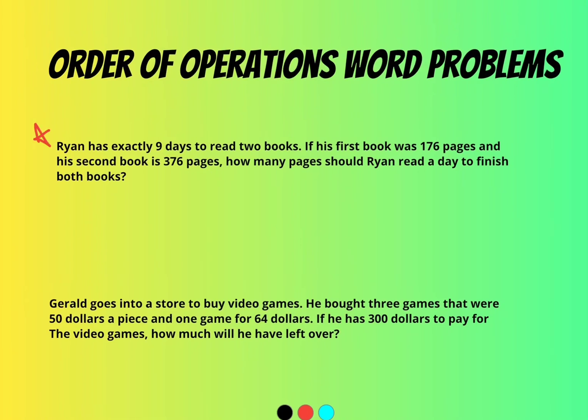it says Ryan has exactly nine days to read two books. If his first book was 176 pages and his second book is 376 pages, how many pages should Ryan read a day to finish both books? So you've got Ryan. He's happy because he likes to read. His first book is 176 pages long. And his second book is 376 pages long. And he has to read both of those books in nine days.